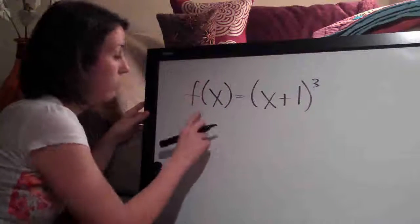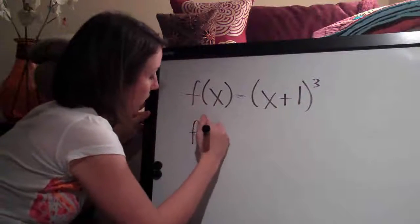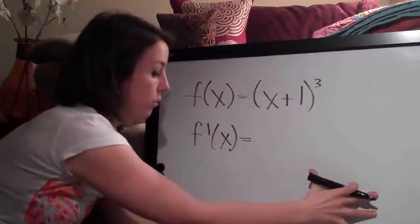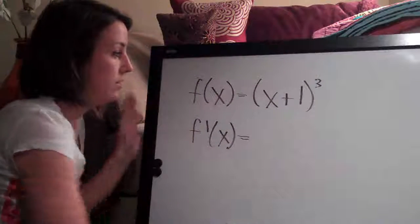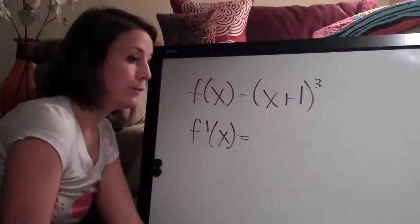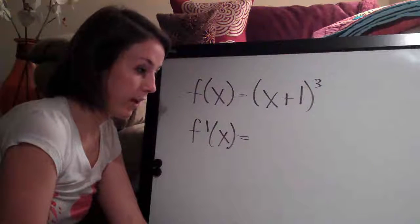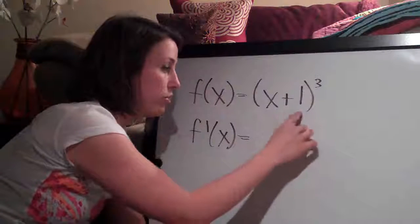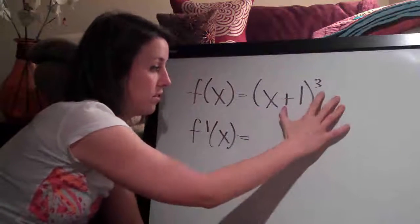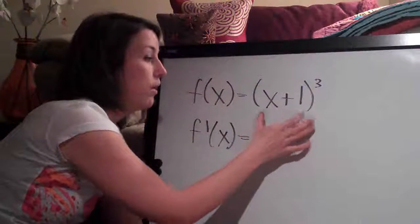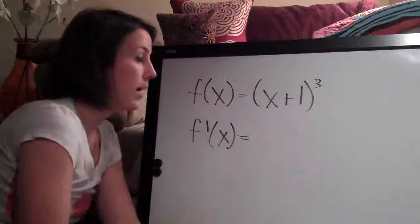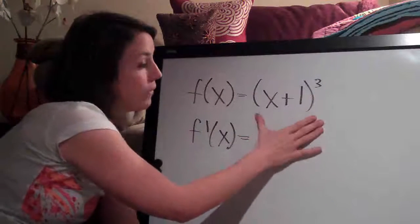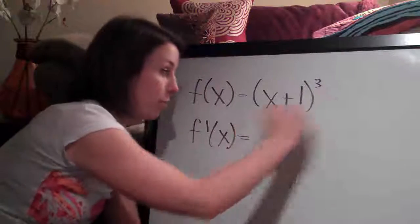So the derivative, of course, f prime of x, and then chain rule. Basically what it means is it allows you to deal with something that's a little more complex. We have two terms here inside of these parentheses and then an exponent that's applying to the term as a whole. You can use chain rule to take the derivative of this function without having to multiply everything out.